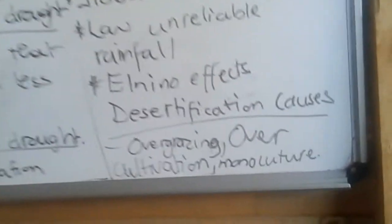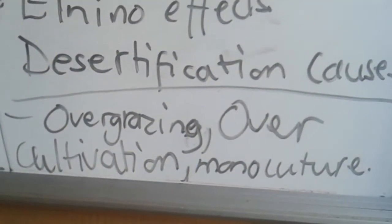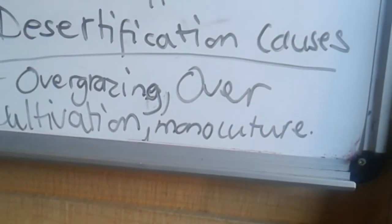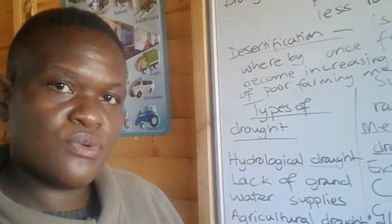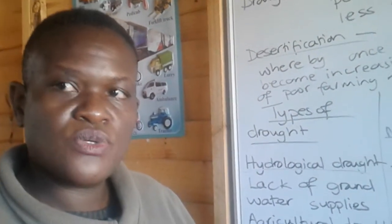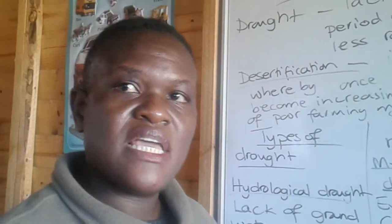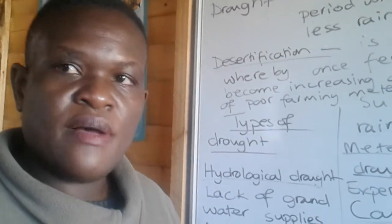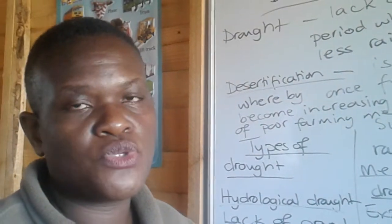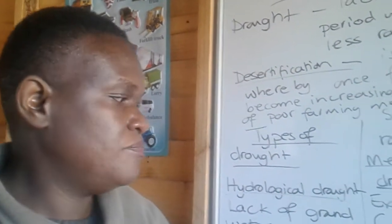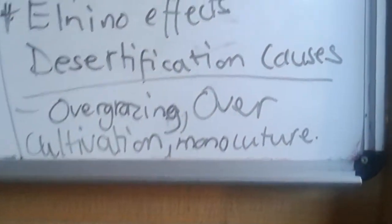When we look at desertification — what causes the spread of desert areas to non-desert areas — we have overgrazing, over-cultivation, monoculture, and deforestation. Overgrazing is when our livestock consume all the grass cover on the surfaces. When they consume all the grass cover, they expose the land to soil erosion, because we no longer have grass cover that binds the soil together. Monoculture is the growing of one crop year after year.